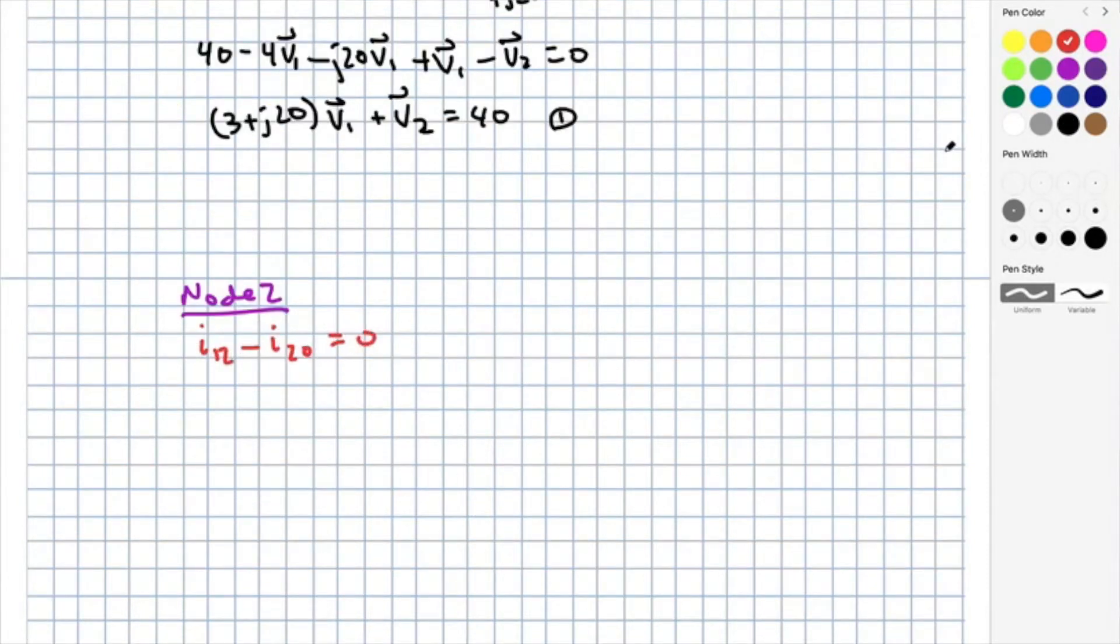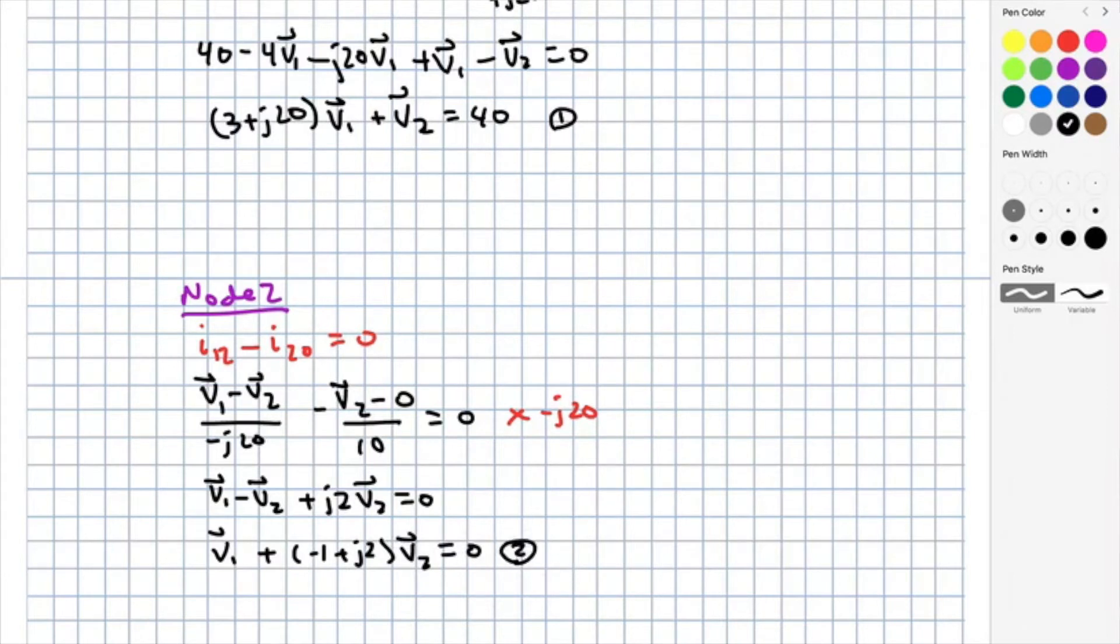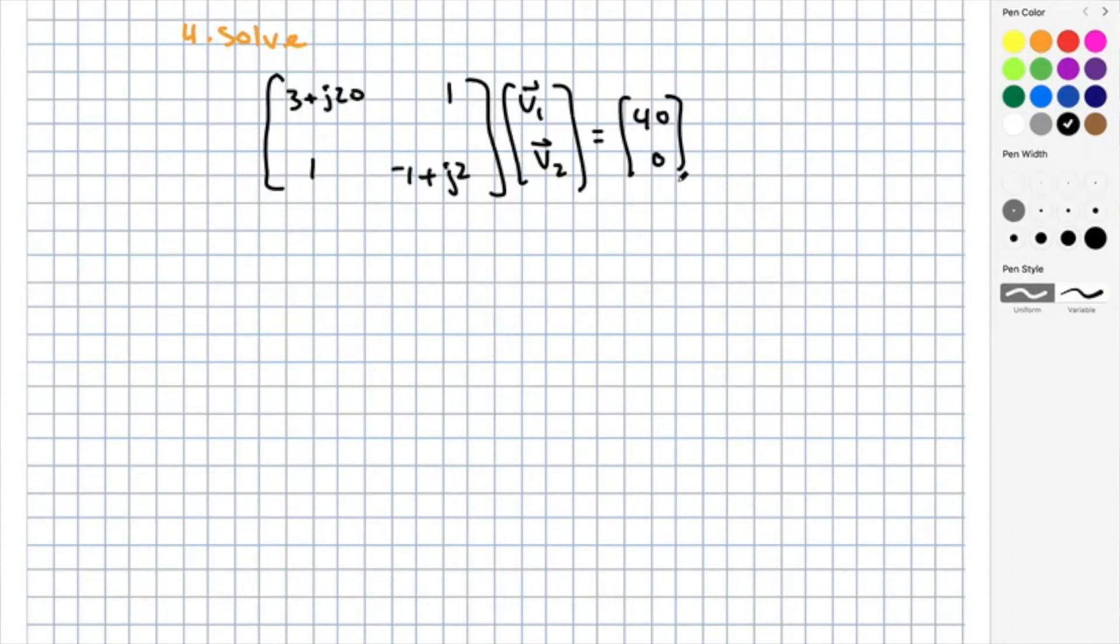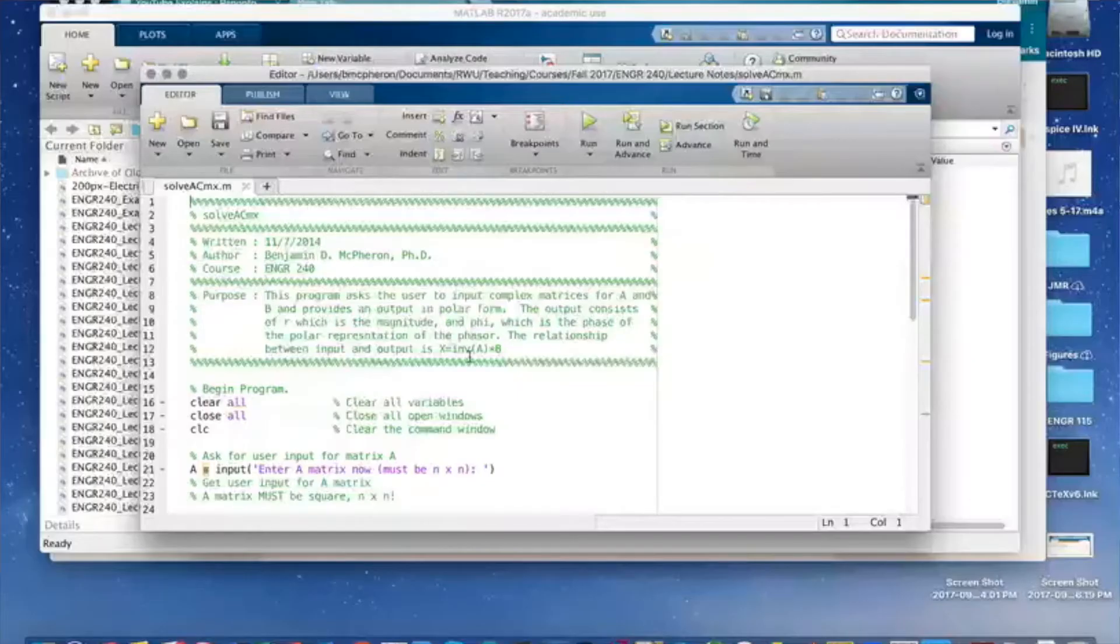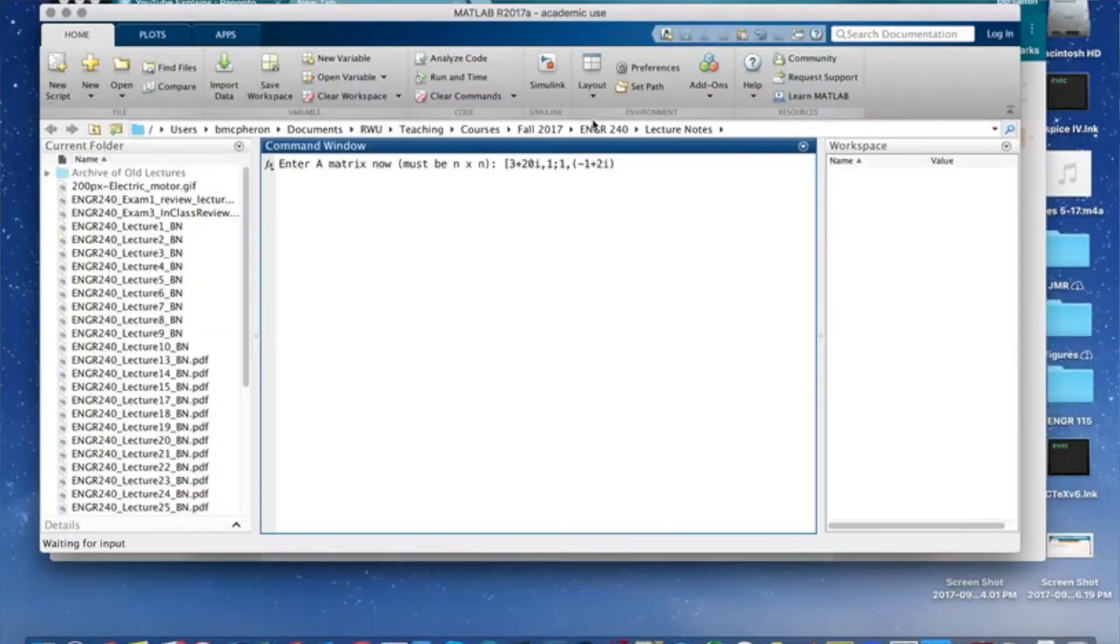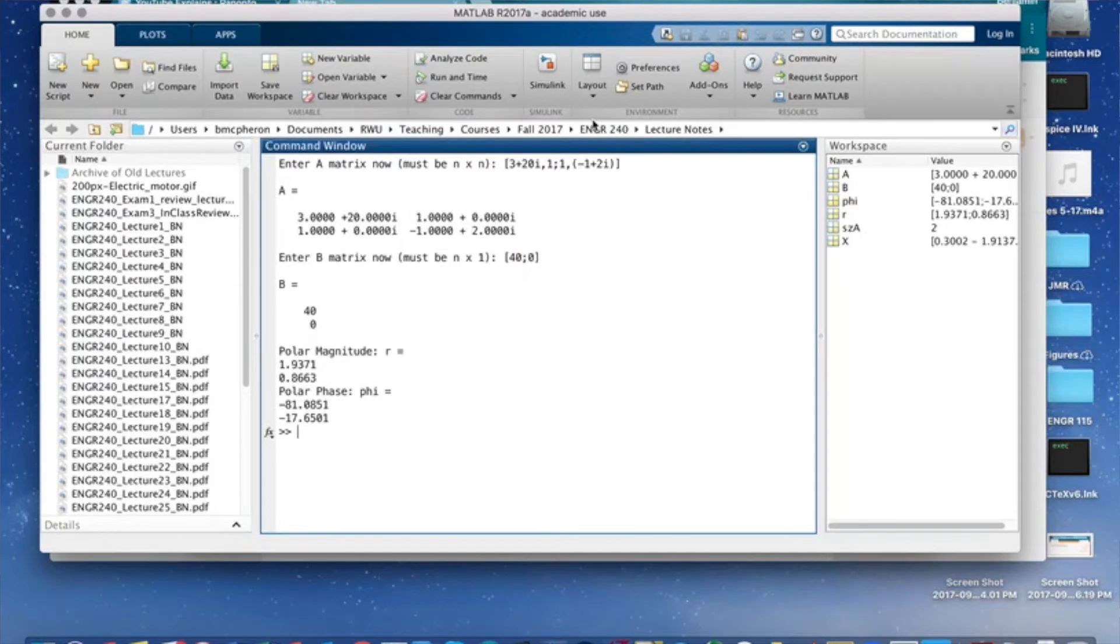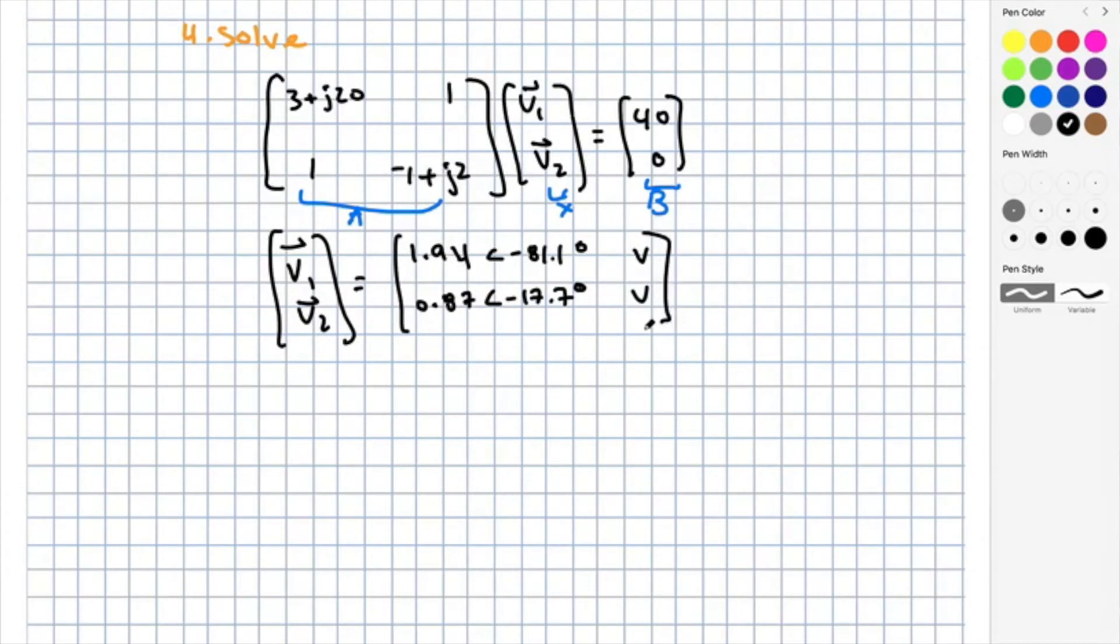On to step four, solve. I'll put these in matrix form and use MATLAB. Fortunately, I already have a nice program written called Solve AC Matrix that will ask for the A matrix and B vector and return the polar form of the vector x. Plugging this in, I get v1 equals 1.94 angle negative 81.1 degrees volts and v2 equal to 0.87 angle negative 17.7 degrees volts.